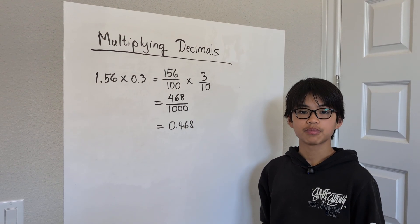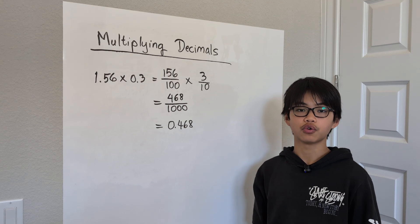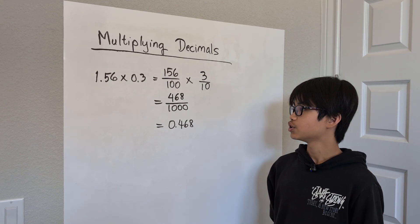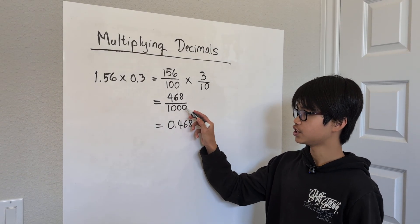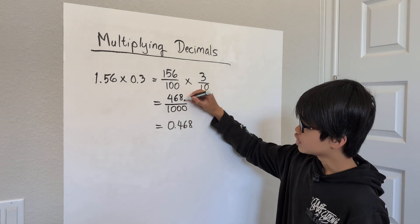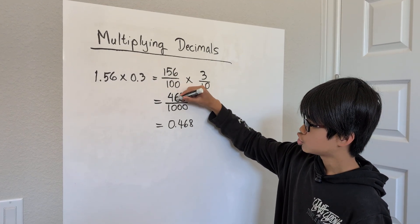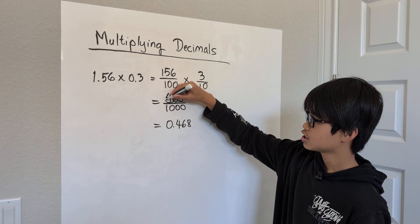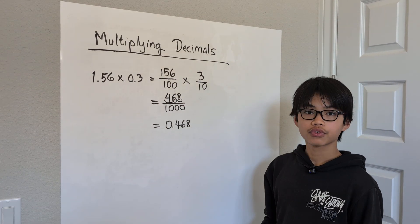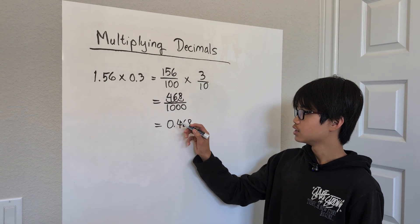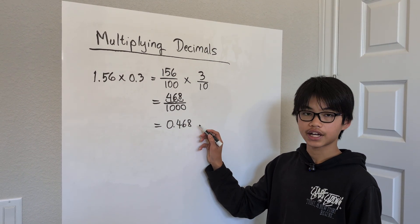Now, the last step is to switch it back to a decimal form. Because we know 1000 has three zeros, we can move the decimal point from here, 1, 2, and 3 to make it at the very beginning. So then it can equal 0.468.